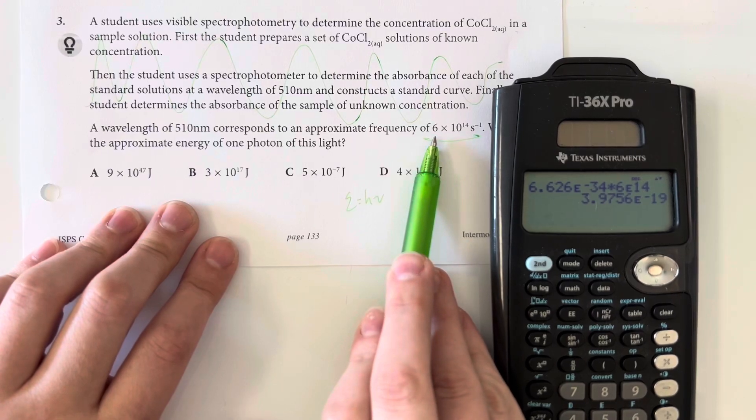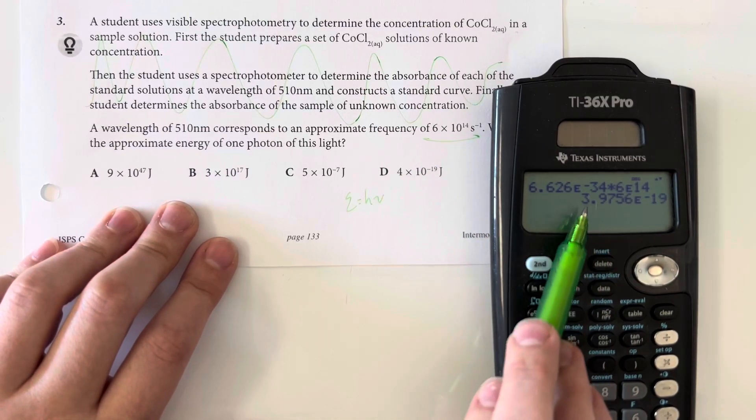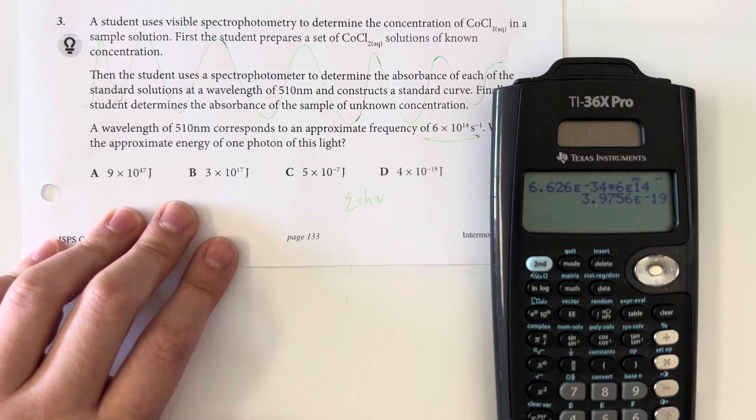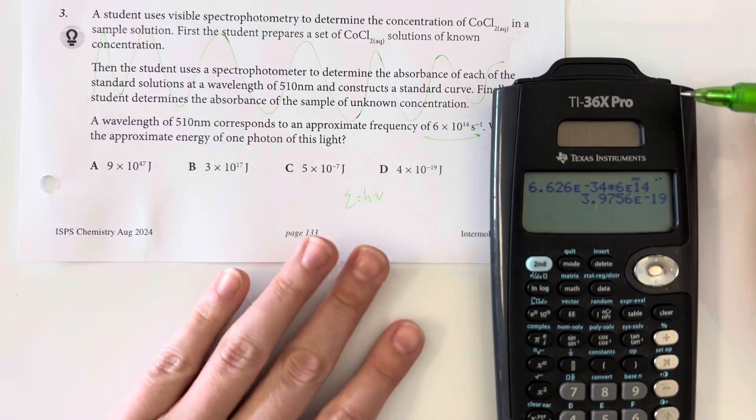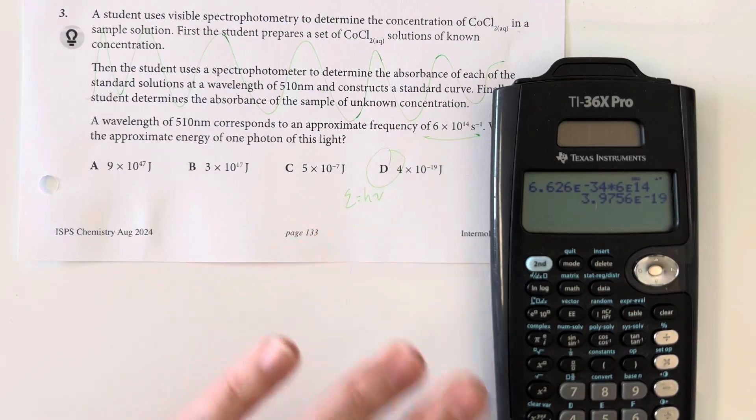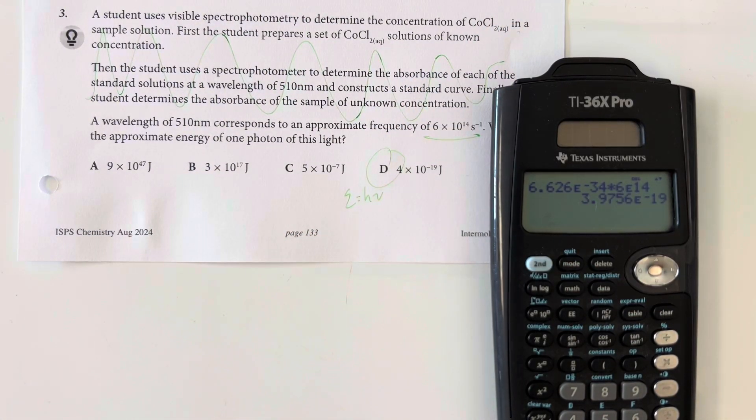I only get one sig fig from the 6 times 10 to the 14th. So this is going to round up to 4 times 10 to the negative 19th. And then my energy unit is joules. So that is it.